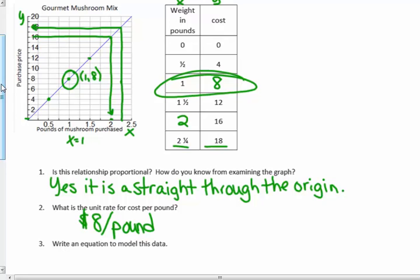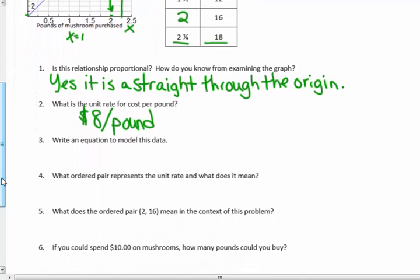$8 per pound. Write an equation. Well, that's my K. That is my unit rate. So, my equation. Write an equation to model this. Y equals 8X.